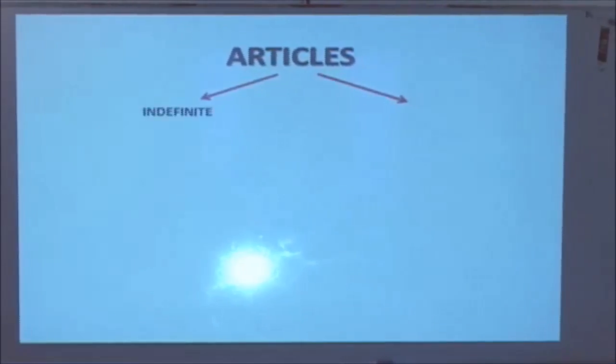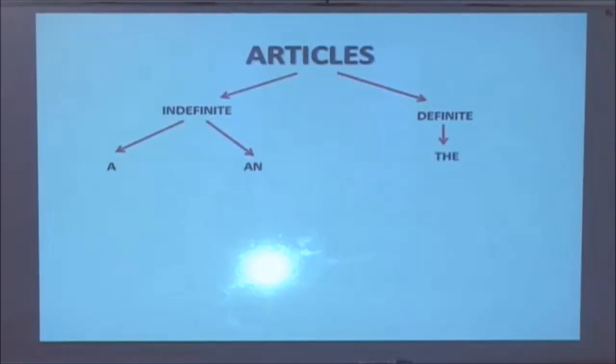Articles can be divided into two types, namely the indefinite article and the definite article. A and an are two types of indefinite article, whereas the is a type of definite article. Let us look at the examples.